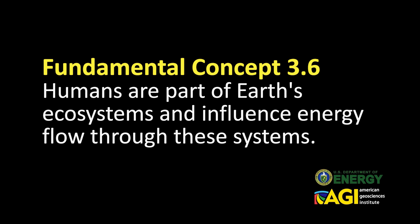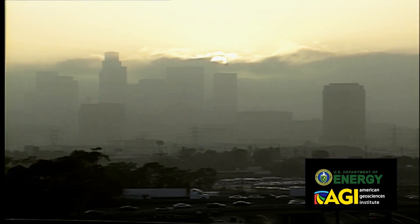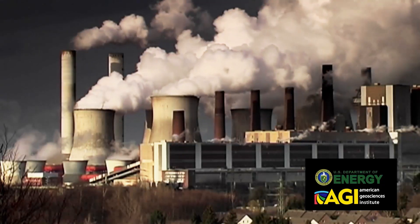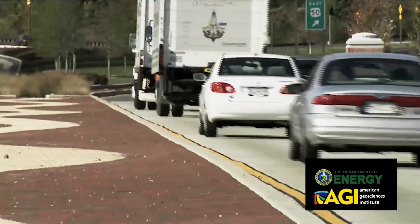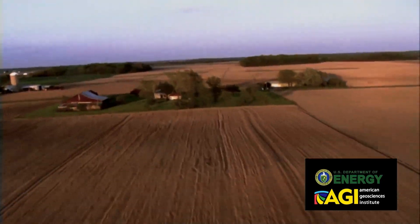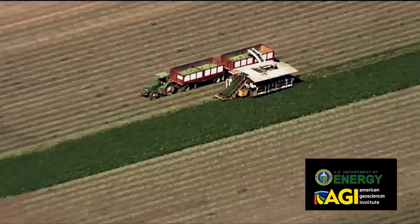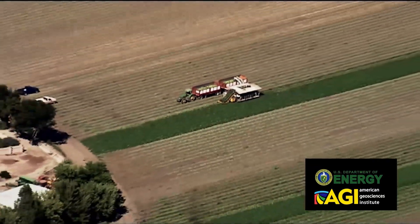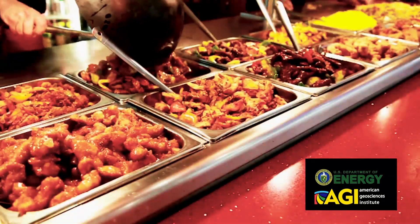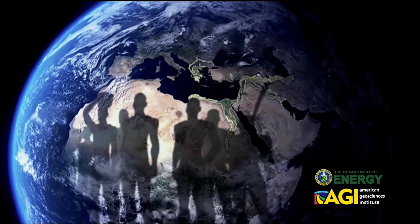Humans are part of Earth's ecosystems and influence energy flows through these systems. Humans are modifying the energy balance of Earth's ecosystems at an increasing rate. These changes happen, for example, as a result of changes in agricultural and food processing technology, consumer habits, and human population size.